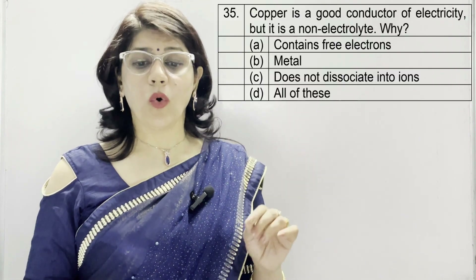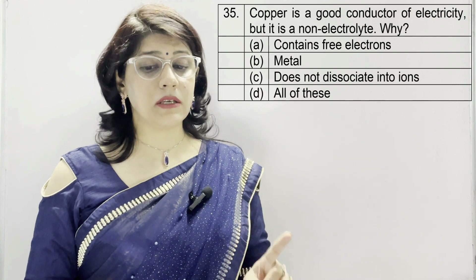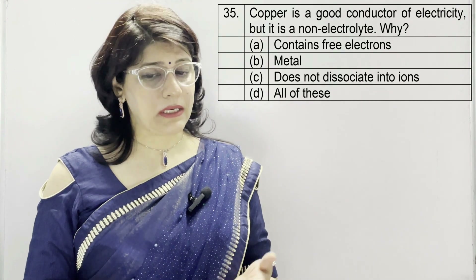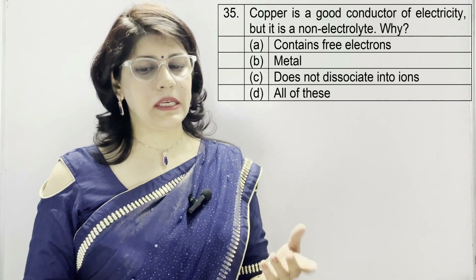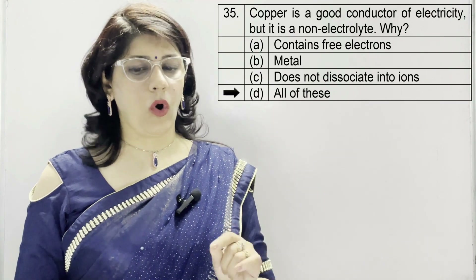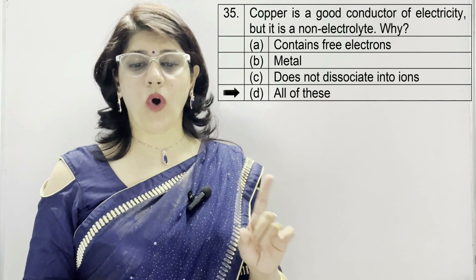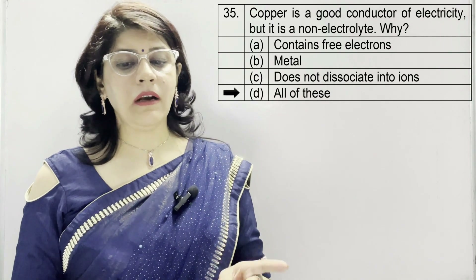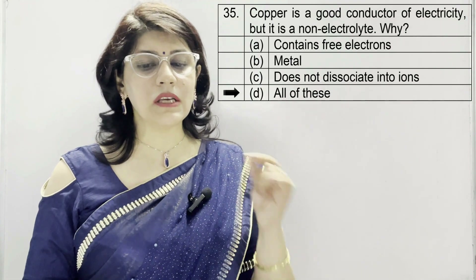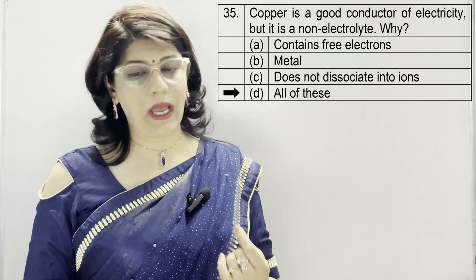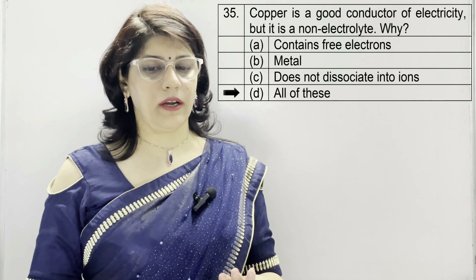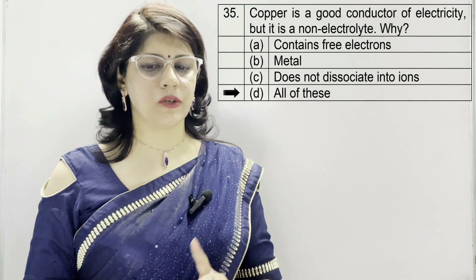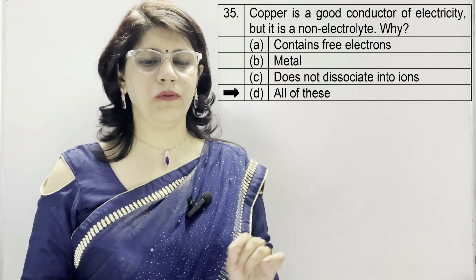In question number 35: copper is a good conductor of electricity but it is a non-electrolyte. Why? A: contains free electrons, B: it is a metal, C: does not dissociate into ions, D: all of these. The correct option is D — all of these. Copper contains free electrons, it is a metal, and it does not dissociate into ions — that is why it is a non-electrolyte despite being a good conductor.